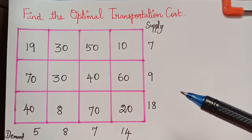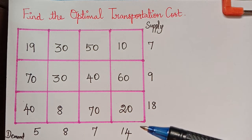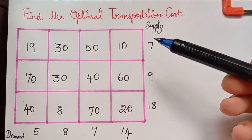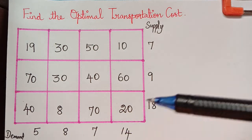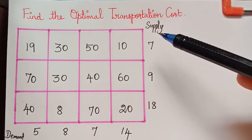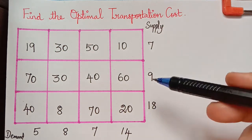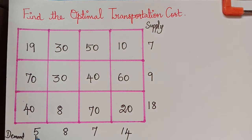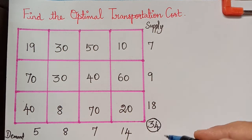The first step is to check whether the given problem is a balanced or unbalanced transportation problem, for which we sum up the supply and demand separately. The sum of supply is 7 plus 9 plus 18 which equals 34, and the sum of demand is 5 plus 8 plus 7 plus 14 which is also 34. So this is a balanced transportation problem because the total supply equals the total demand.